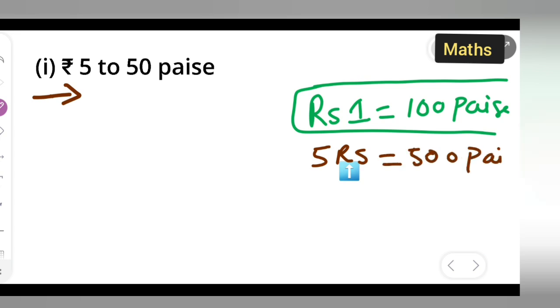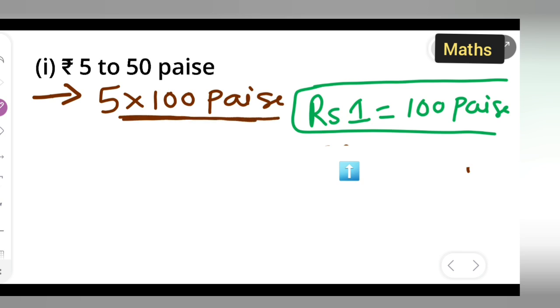So we write this as 5 multiplied by 100 paise, over 50 paise.